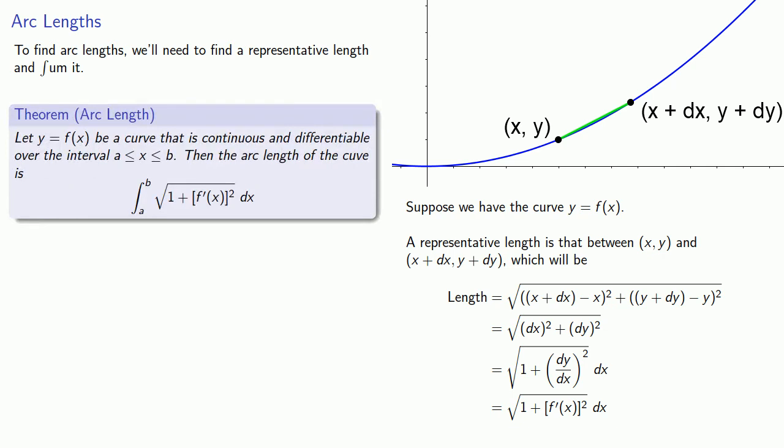Let y equals f(x) be a curve that is continuous and differentiable over the interval between a and b. Then the arc length of the curve is going to be the integral from a to b of square root 1 plus f prime of x squared.